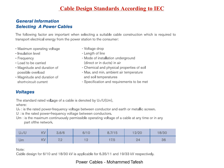The first condition which is very important in the design of a power cable, related to IEC, is the voltages. The standard rated voltage of a cable is denoted by U0/U or UM, where U0 is the rated power frequency voltage between conductor and earth or metallic screen, U is the rated power frequency voltage between conductors, and UM is the maximum continuously permissible operating voltage of a cable at any time or in any part of the network.